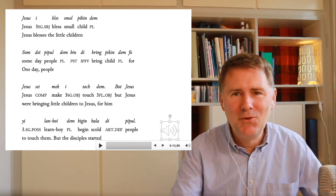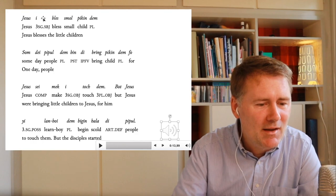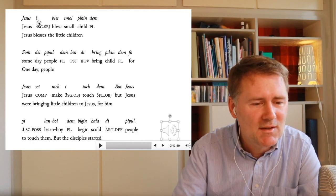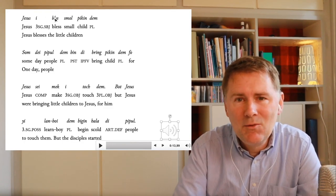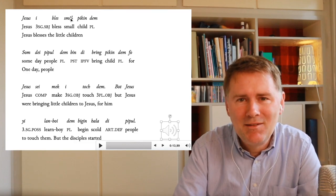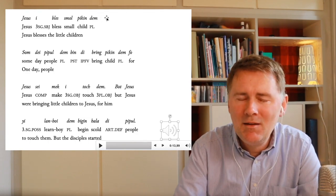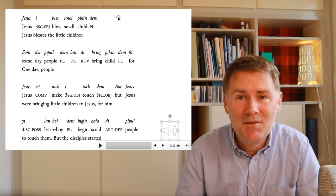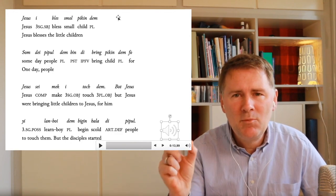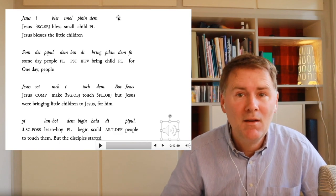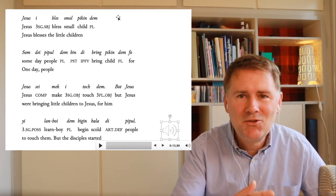Let's go through this bit by bit. The first sentence starts with 'Jesus', followed by 'he' — a marker identifying Jesus as the subject in third person singular. 'Bless' is the word you know from English. 'Small' is easy to identify as the adjective. 'Pekin' means child, and 'dem' is a plural marker, so 'pekin dem' means children. Many pidgins work so that nouns only have the singular form, and a separate word indicates plurality. So the first line means: 'Jesus blessed the small children.'